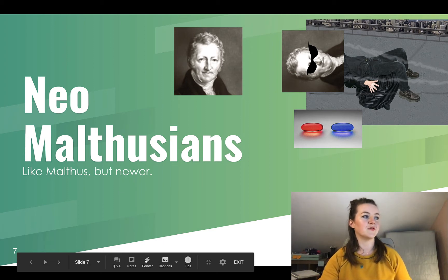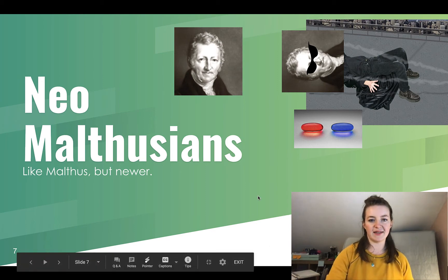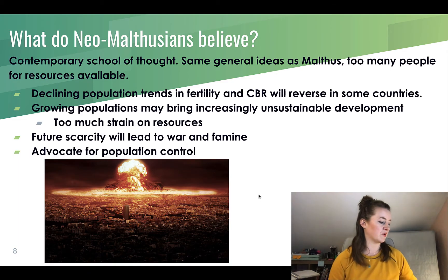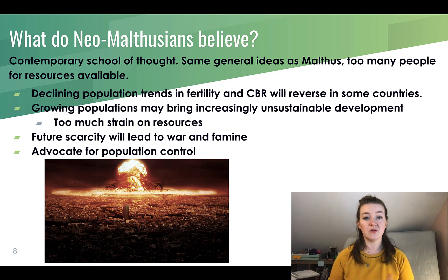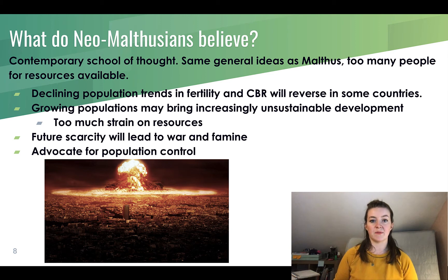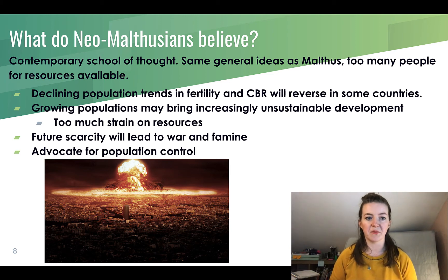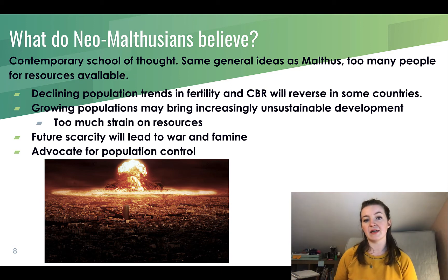Then we get the neo-Malthusians — like Malthus but newer. This is a contemporary, modern school of thought that began in the 20th century. They share Malthus's general ideas: too many people for the resources available. They believe that while there are declining trends in fertility and crude birth rate, these will ultimately reverse in some countries and result in massive growth.